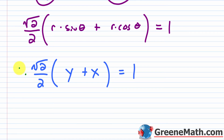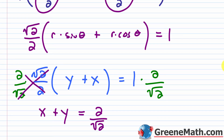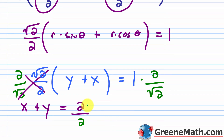Multiply both sides by 2/√2 to isolate (x + y): x + y = 2/√2. Rationalizing the denominator by multiplying by √2/√2 gives x + y = 2√2/2 = √2. So the rectangular form is x + y = √2.